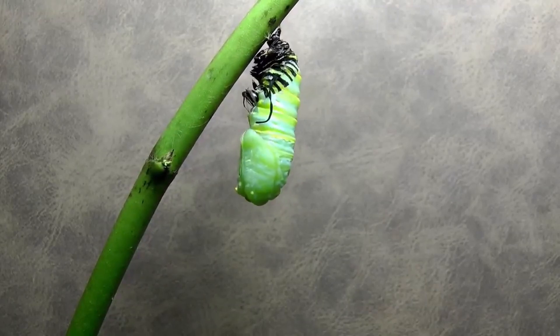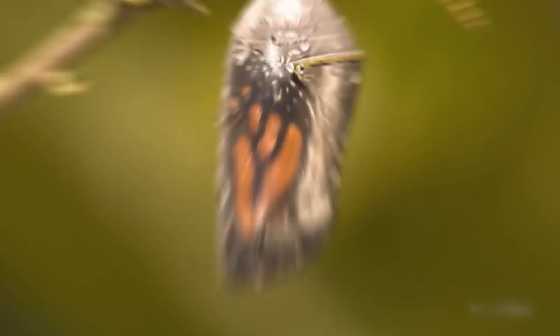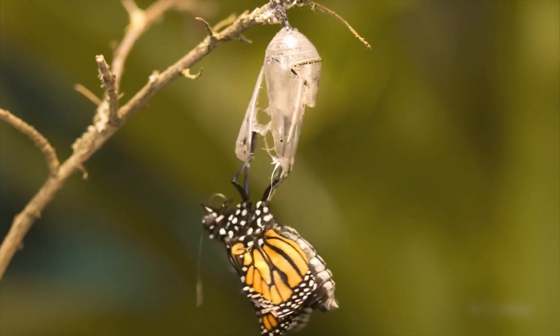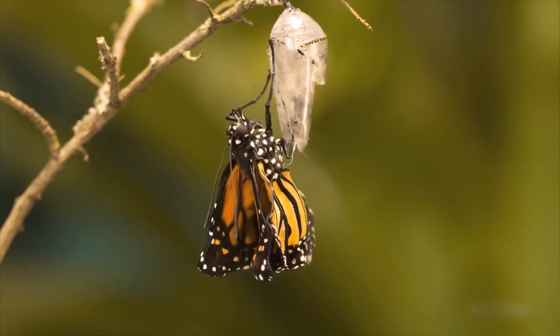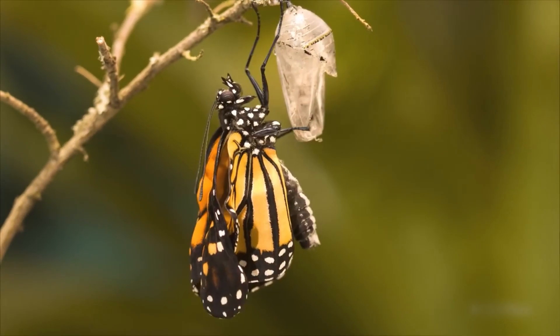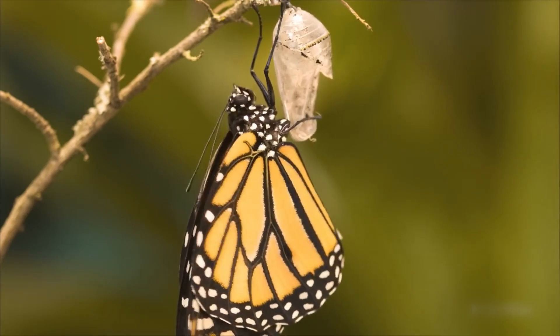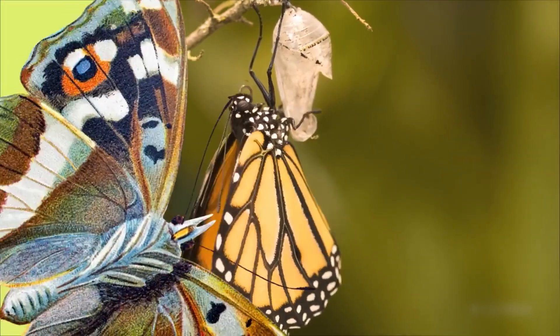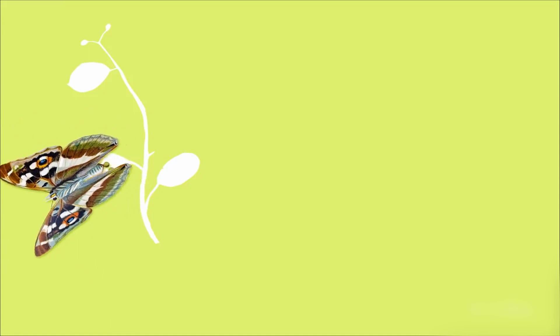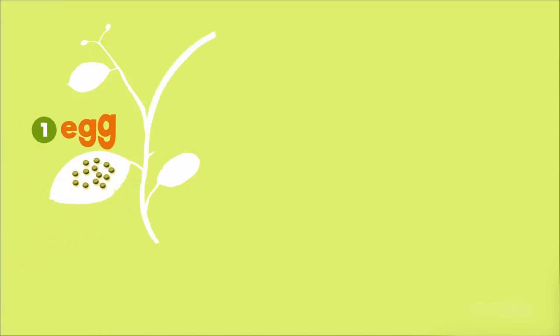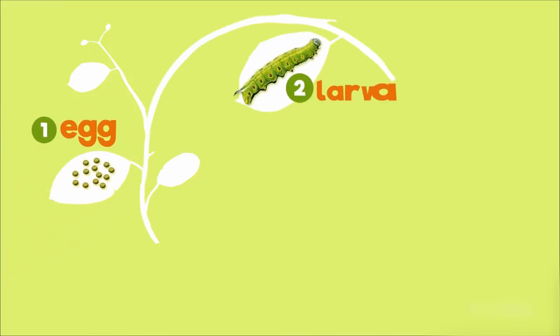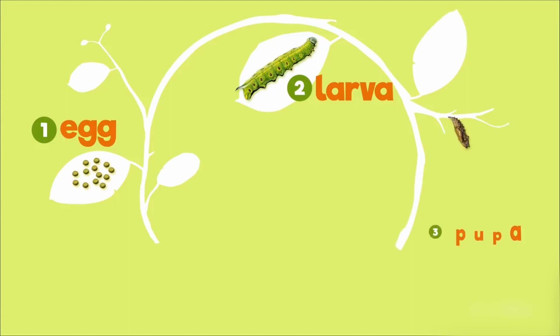The last stage is when the adult butterfly emerges from its cocoon and spreads its beautiful wings, getting ready to take flight. Once it's ready, it will fly off and eventually lay its own eggs, starting the cycle all over again.